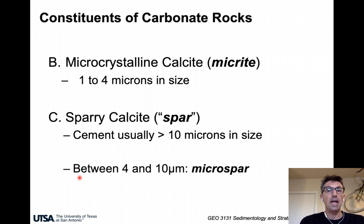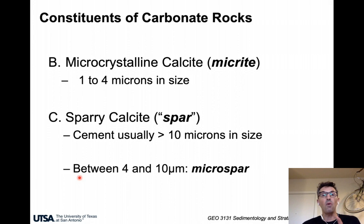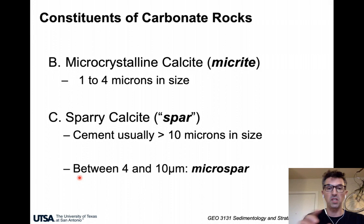Micrite is made of microcrystalline calcite. The crystal size ranges between 1 and 4 microns. Whereas for the spar — the sparry calcite — the cement is usually larger than 10 microns. In between, between 4 and 10 microns, we have what we call a microspar, which is sometimes pretty hard to differentiate because of the grain size boundary.